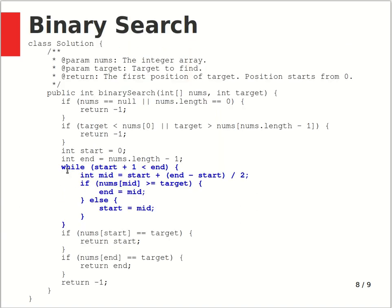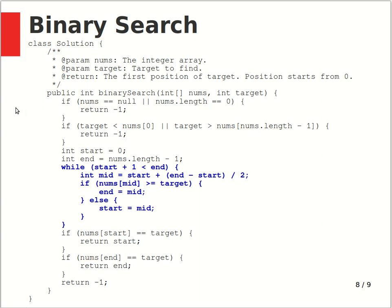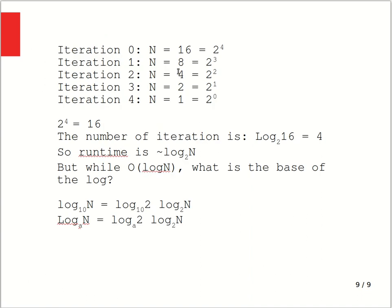For this binary search, the while loop involves O(log N) iterations, where N is the length of the numbers array. This is a typical situation where you get an O(log N) runtime. The log N runtime is better than linear runtime, and in practice when you see O(log N) it's usually from a binary search operation where you cut the search range by half each time. It turns out to be a very efficient algorithm — it doesn't get more efficient than this kind of binary search operation in practice.